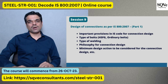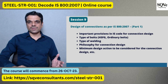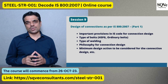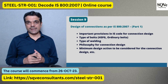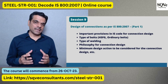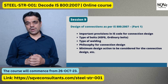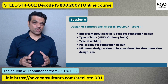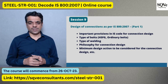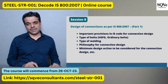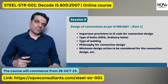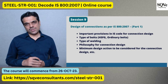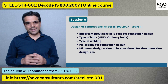The next session covers connection design, because connections are the weak link in a steel structure and must be stronger than the members, so they do not become the weak link during extreme events. We will cover important IS code provisions for connection design, different bolt types such as HSFG (High Strength Friction Grip) bolts and ordinary bolts, different types of welding mentioned in the code, and the overall philosophy for connection design and minimum design actions per IS code.